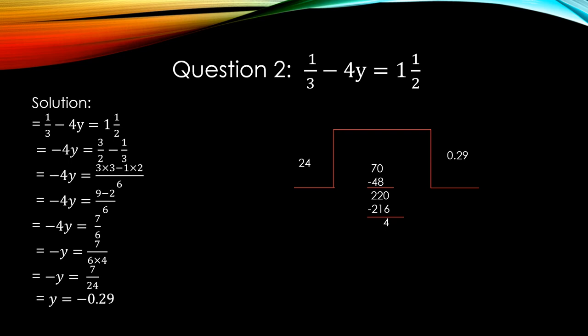Now consider question number 2. It is a linear equation in one variable with fractions: 1 upon 3 minus 4y is equal to one whole number 1 upon 2. We have to find out the value of y. In the solution, you first write the question again. On the right hand side, there is a whole number fraction. First you change the whole number fraction into improper fraction. 2 times 1 is 2, 2 plus 1 is 3, 3 upon 2.